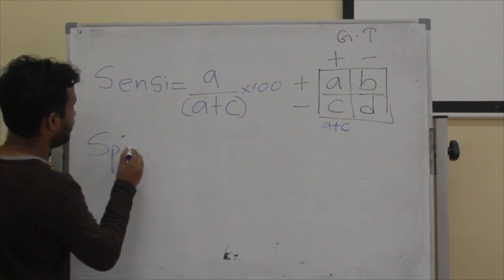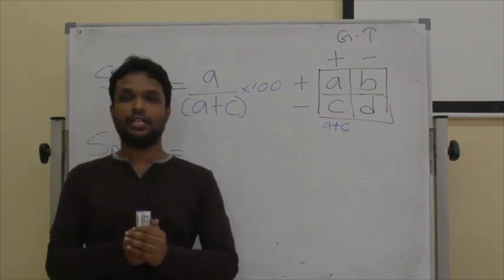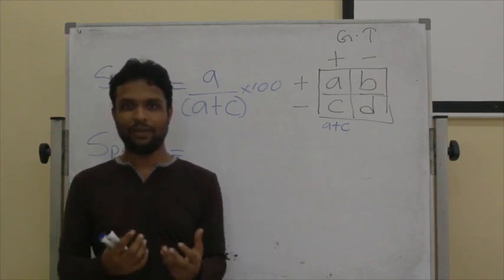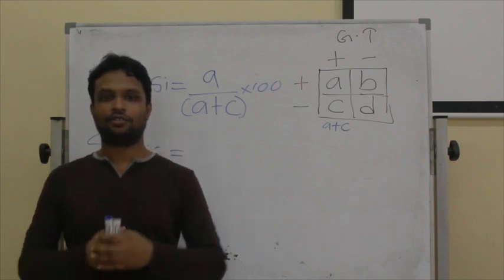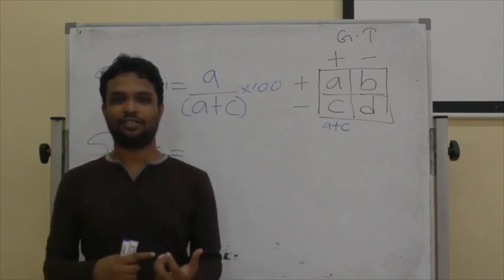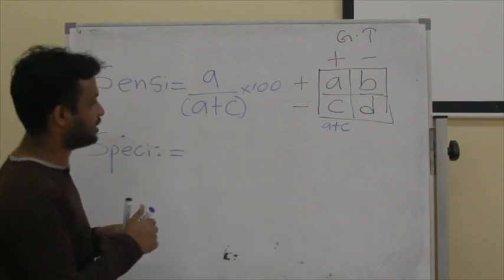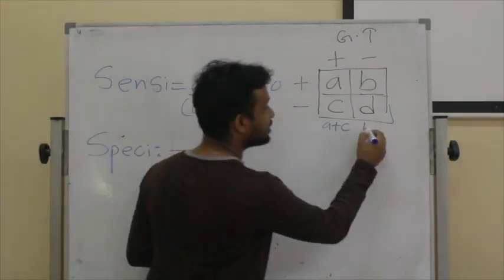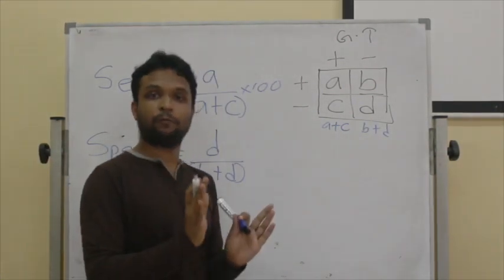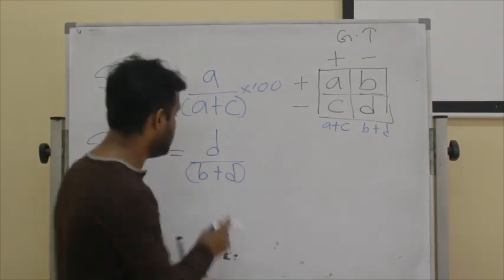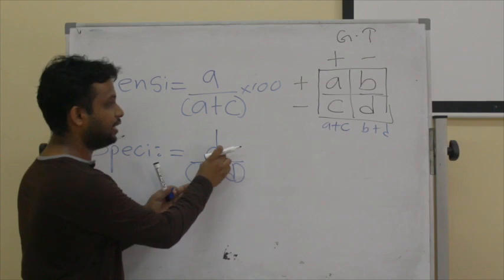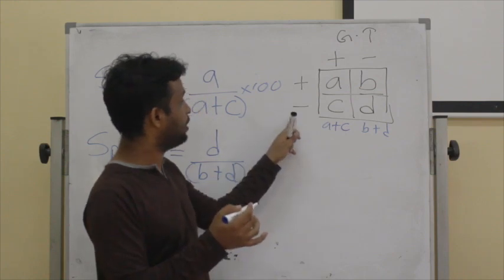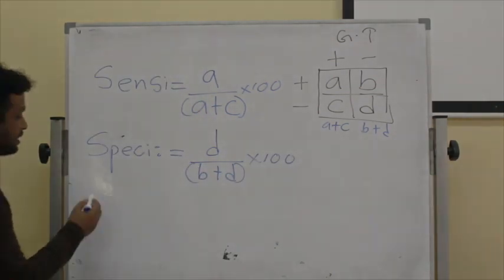The next concept is specificity. Specificity is the probability of identifying a disease-negative individual as disease negative — simply, the ability of the screening test to identify a disease-negative patient as negative. The formula is D divided by B plus D, multiplied by 100. B plus D is the total number of people who do not have the disease, and D is the number of negative patients correctly identified by the screening test.